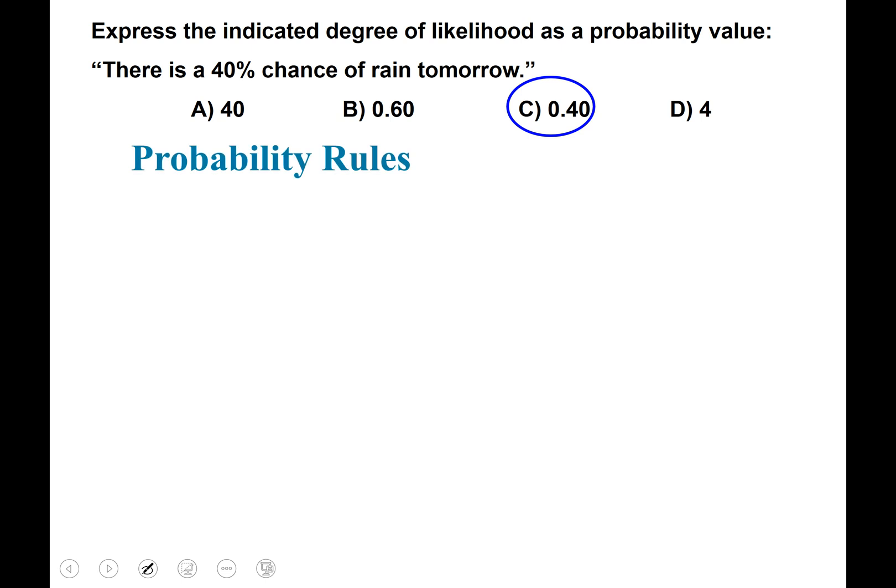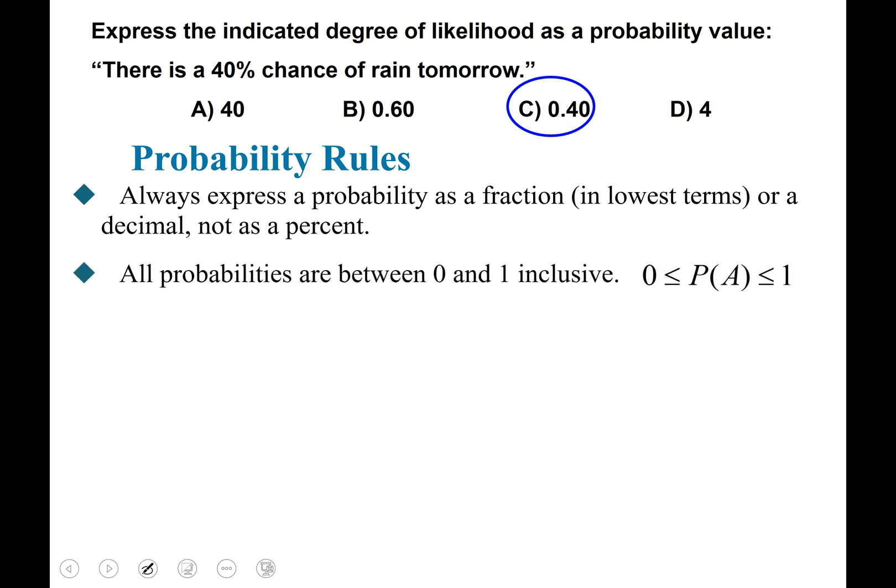There are some rules for the probability values that we'll need to follow. First, always express the probability as a fraction in lowest terms or as a decimal, not as a percent. Next, all probabilities are between zero and one inclusive.